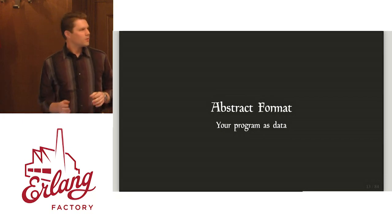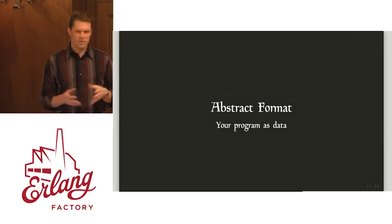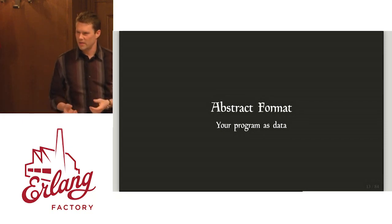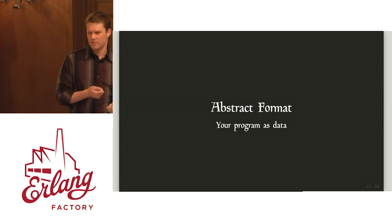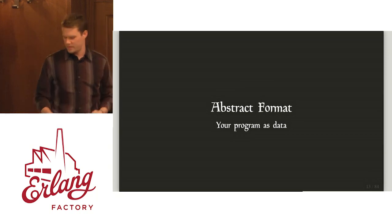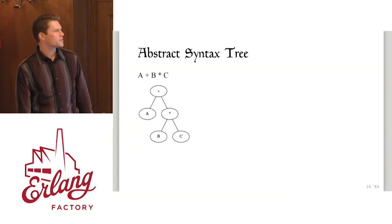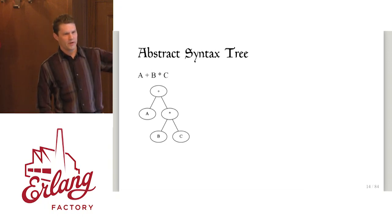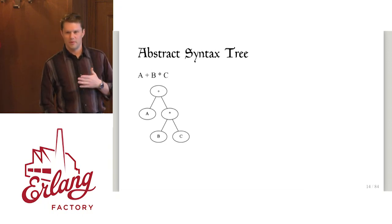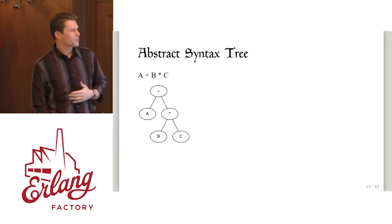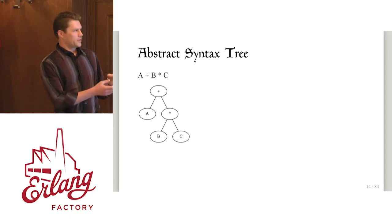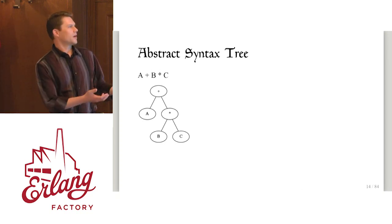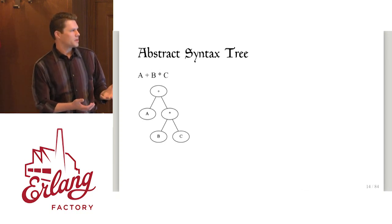What does this abstract format look like? We have forms now — how do we start to transform these forms and do something interesting with it? We'll take a very simple example and then work up quickly. If you have this text — a plus b times c — you're going to break this up into the tokens a, plus, b, star, c. They're still just text but now they're just smaller pieces of text.